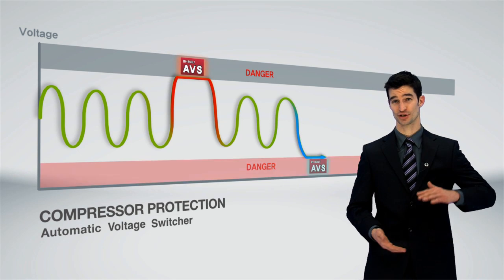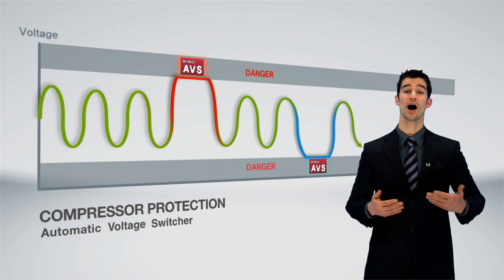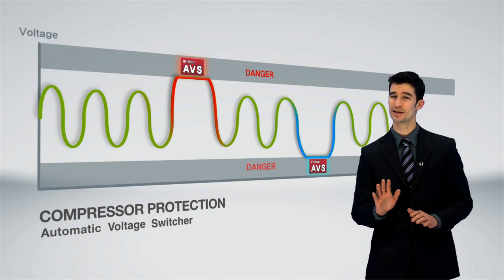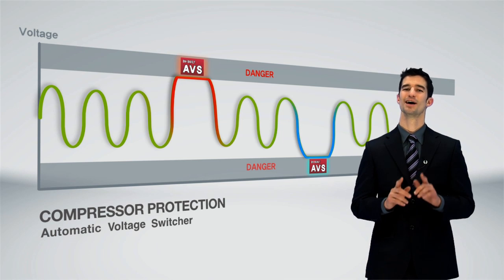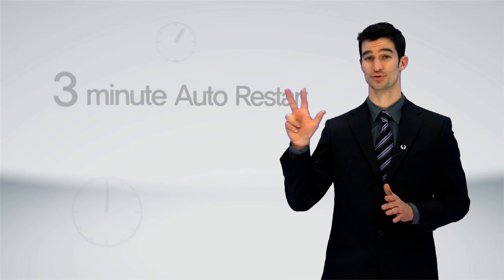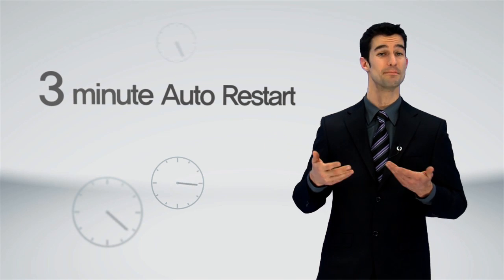When it detects a sudden surge or drop in voltage, it will automatically start to operate, briefly turning off the AC. But if you wait for just three minutes, the AC will be back up and running.